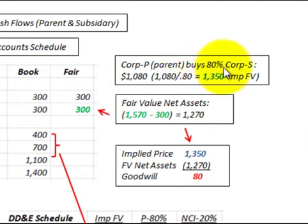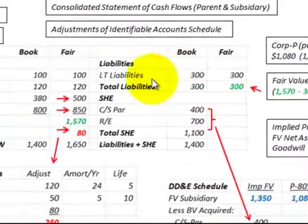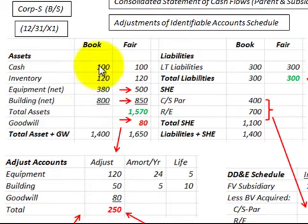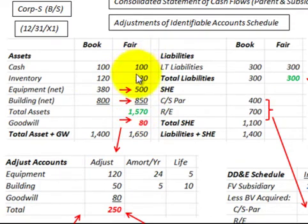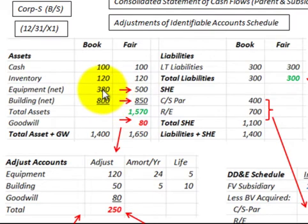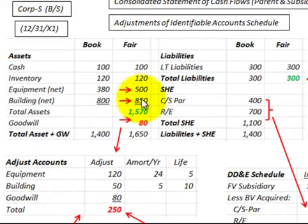Corp P, the parent company, is going to buy 80% of Corporation S. Looking at Corporation S's balance sheet at the acquisition date, the subcorporation had a book value for its assets, and for consolidating purposes we have to bring these asset and liability accounts up to their fair value. For our example, we are just going to look at an equipment account and a building account, where the equipment has been appraised up to a greater fair value, and the building as well has been appraised to a greater fair value at the acquisition date.